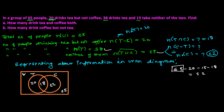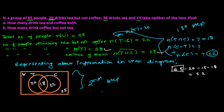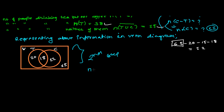This is how we solve this type of problem. First step: write the given information properly. Second step: represent it in the Venn diagram. Third step: do the calculation. In a more formal way, total people U equals the sum of: people drinking only tea, people drinking only coffee, people drinking tea as well as coffee, and people drinking neither tea nor coffee.